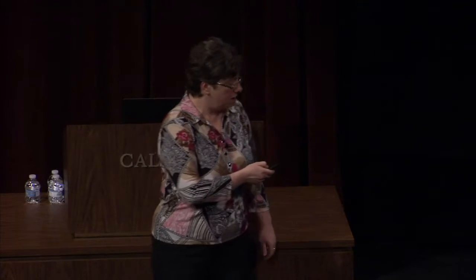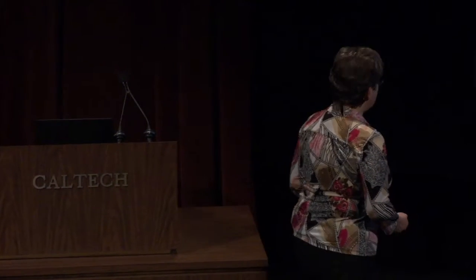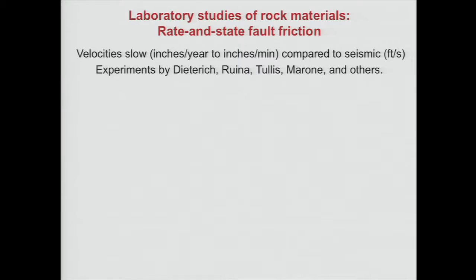This is actually good for our science, because you can imagine studying the response of a layer like that in a lab. You don't need to know how vast rock expanses behave — if you're concerned about the behavior of this narrow layer, you can actually study it. It turns out you can determine relevant friction laws by studying such narrow layers in the lab. People have done that and came up with this notion of rate and state fault friction.